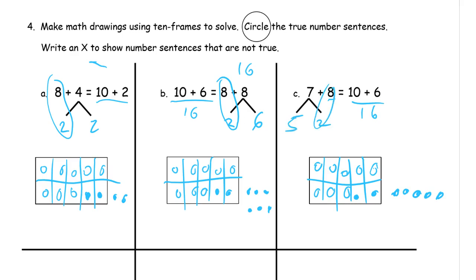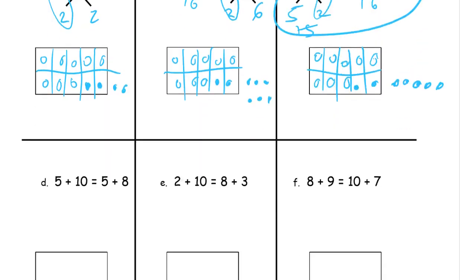There's our 10. So 10, 5. This is 15. So this is not, 15 is not the same as 16. So it's not true. So we're going to circle it. And that's all we're doing.